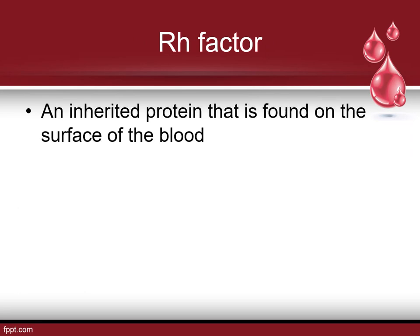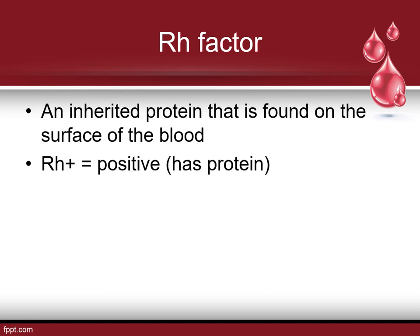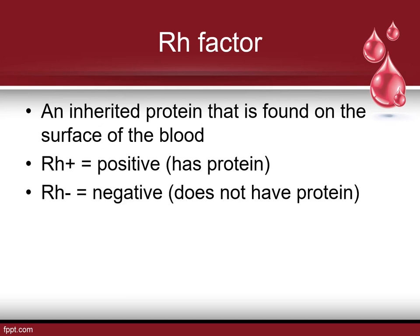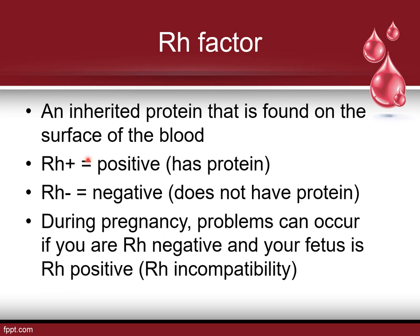The RH factor is an inherited protein found on the surface of blood. If you've heard 'O positive' or 'AB negative,' this is what determines the positive or negative. If you have this protein, you're considered RH positive; if you don't have it, you're RH negative. Most people — regardless of race or nationality — tend to be RH positive.